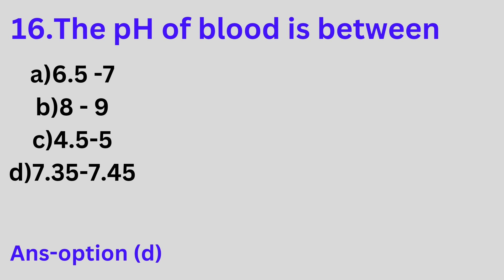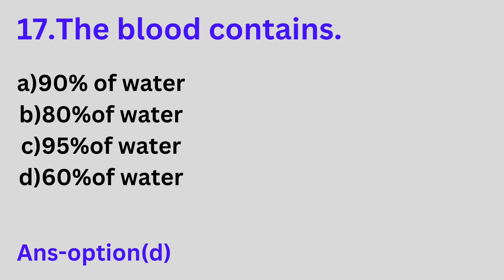Question 16: The pH of blood is between A. 6.5 to 7, B. 8 to 9, C. 4.5 to 5, D. 7.35 to 7.45. Option D is the correct answer. The pH of blood is between 7.35 to 7.45.